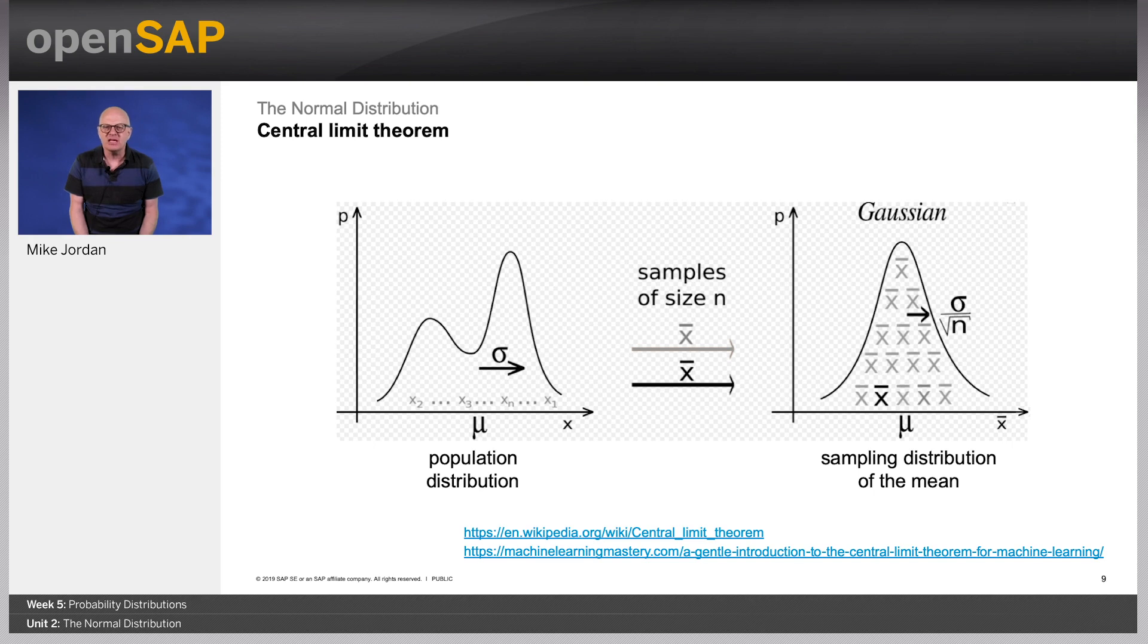The theorem is a key, central concept, because it implies that probabilistic and statistical methods that work for normal distributions can be applicable to many problems involving other types of distributions. A simple example of this is that if you flip a coin many times, the probability of getting a given number of heads in a series of flips will approach a normal curve, with a mean equal to half the total number of flips in each series.